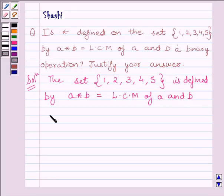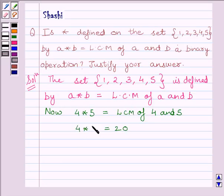Now, if we take two elements of the set, that is 4 and 5, and find 4 star 5 which equals LCM of 4 and 5. LCM of 4 and 5 equals 20, so we get 4 star 5 equals 20, but 20 does not belong to the given set.